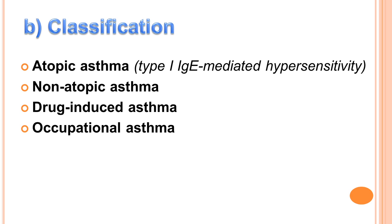Next is drug-induced asthma, which affects about 10% of adults with a diagnosis of asthma, for example aspirin. The last type is occupational asthma, caused by workplace triggers including fumes and dust, such as construction workers or miners. Hen suyễn do thuốc ảnh hưởng khoảng 10% người trưởng thành với chẩn đoán hen suyễn, ví dụ như aspirin. Hen suyễn do nghề nghiệp được gây ra bởi các yếu tố kích hoạt ở nơi làm việc như khói và bụi.